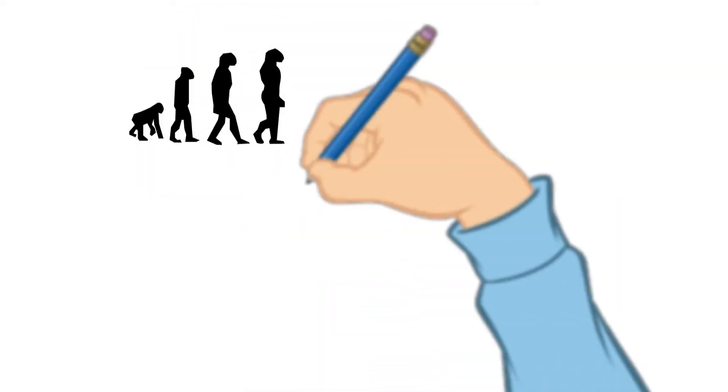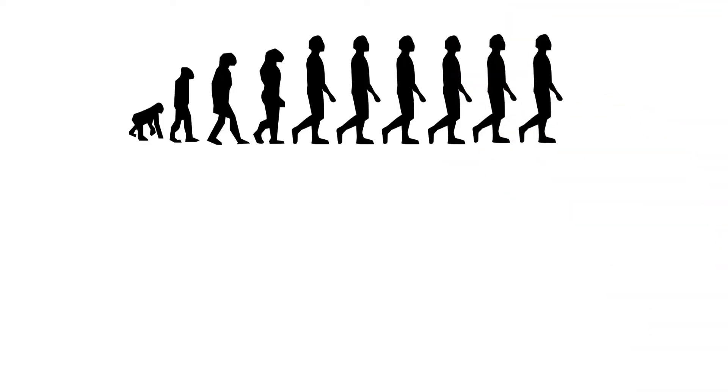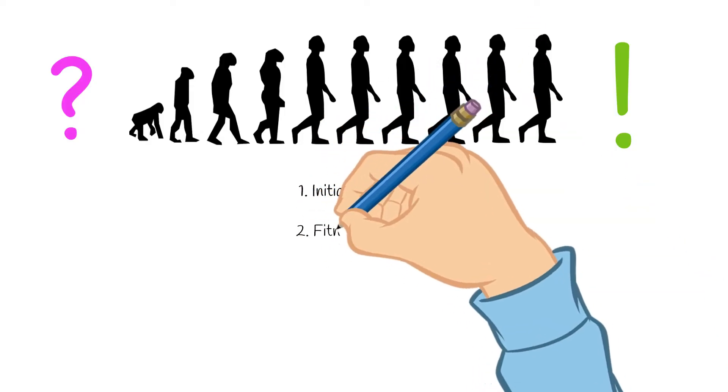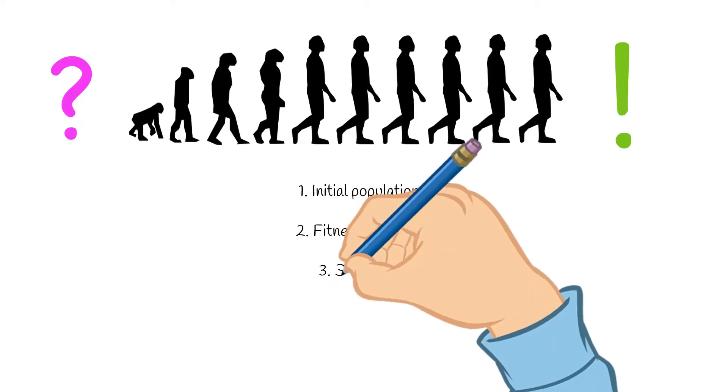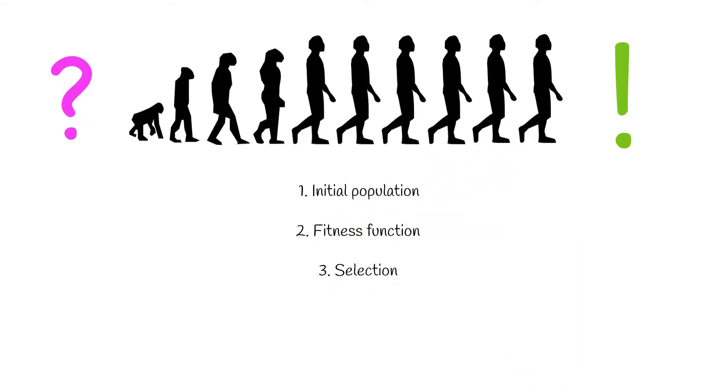What genetic algorithms do is use a survival of the fittest type algorithm to reach the solution much faster. The steps to creating a genetic algorithm include creating an initial population, defining a fitness function, selecting the fittest members of the population,